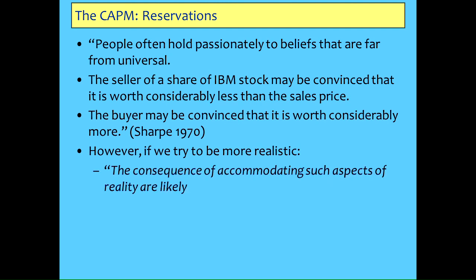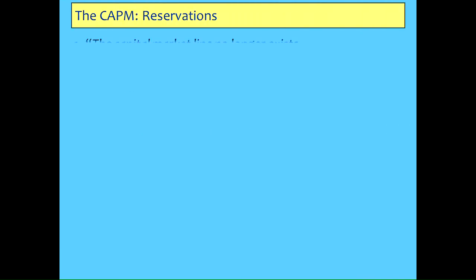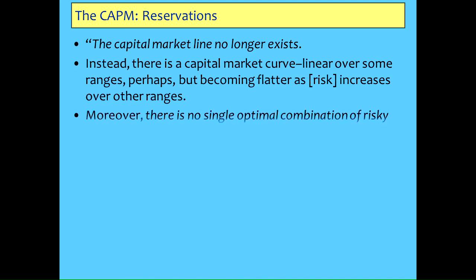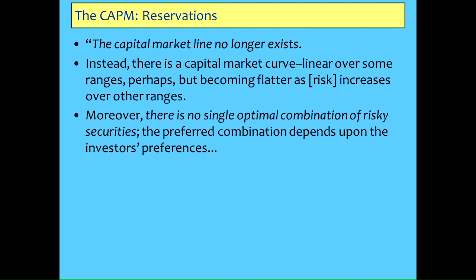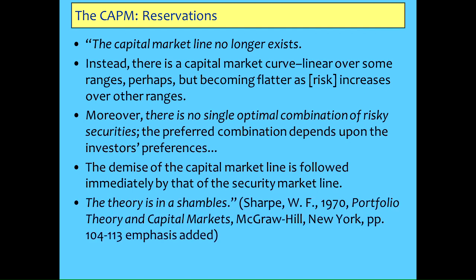Look at this - it would like to be disastrous in terms of the usability of the theory. The capital asset market line doesn't exist. Instead, you might get a curvilinear structure. There's no single optimal portfolio. Therefore, not only does the capital market line go, but even the security market line goes. The theory is a shambles. He's realistically admitting what happens when you take into account the fact that these assumptions aren't true. This is the sort of stuff you should be seeing in your finance textbooks, but you don't - which is why I get you to read the originals.